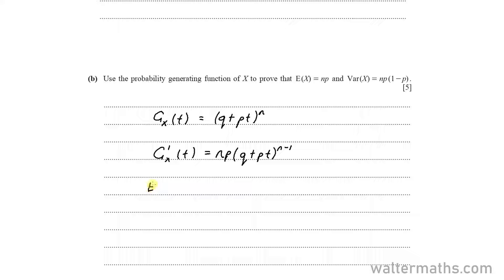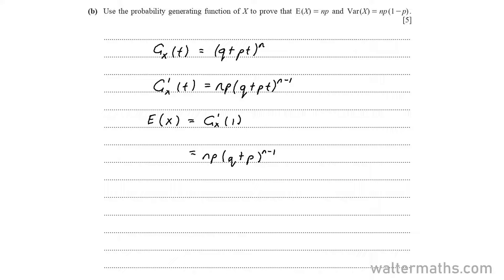We know that the expectation E of X is found by G dash of 1. Substituting 1 for T, that will be NP times Q plus P to the power of N minus 1. Now, P plus Q is equal to 1, and 1 raised to any power just gives us 1. So we get NP for the expectation — hence proved.